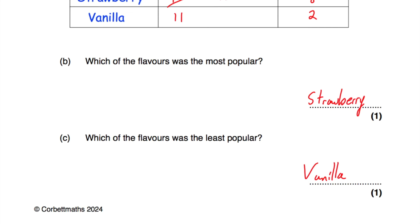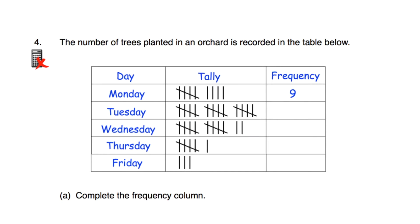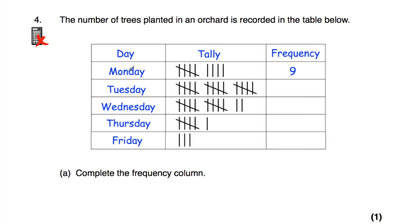Question number four. We've got a tally chart with days of the week — Monday, Tuesday, Wednesday, Thursday, Friday — recording the number of trees planted in an orchard. Nine trees were planted on Monday. Part A says complete the frequency column. Tuesday: 5, 10, 15 — so 15 were planted on Tuesday. Wednesday: 5, 10, 12 — 12 on Wednesday. Thursday: five and one is six. Friday: three. We've completed the frequency column.